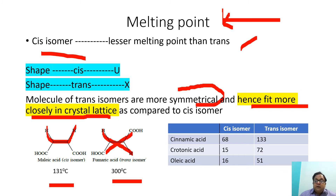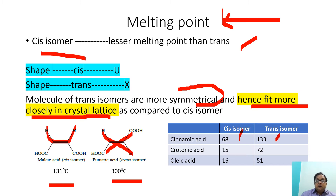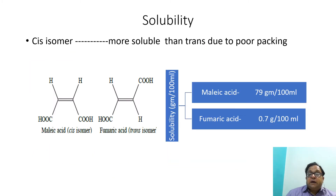Similarly, the cis isomer of cinnamic acid has a melting point of 68°C and the trans isomer has 133°C. Crotonic acid exists with a melting point of 15°C as the cis isomer and 72°C as the trans isomer. Oleic acid also has 16°C when it is the cis isomer and 51°C when it is the trans isomer.